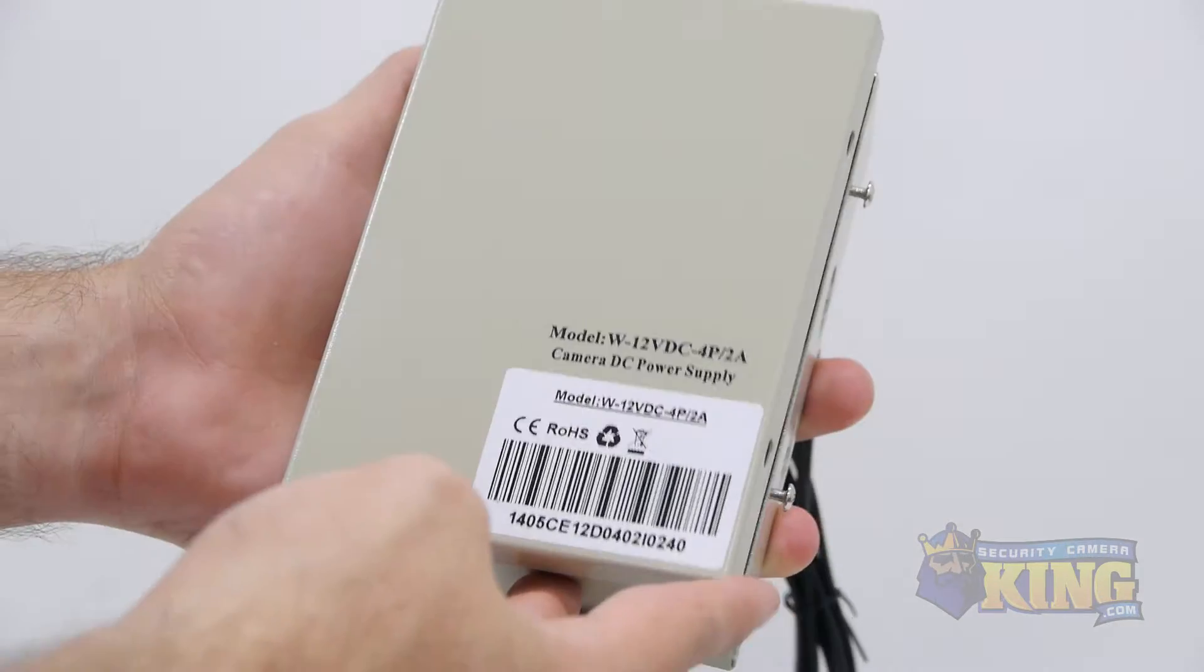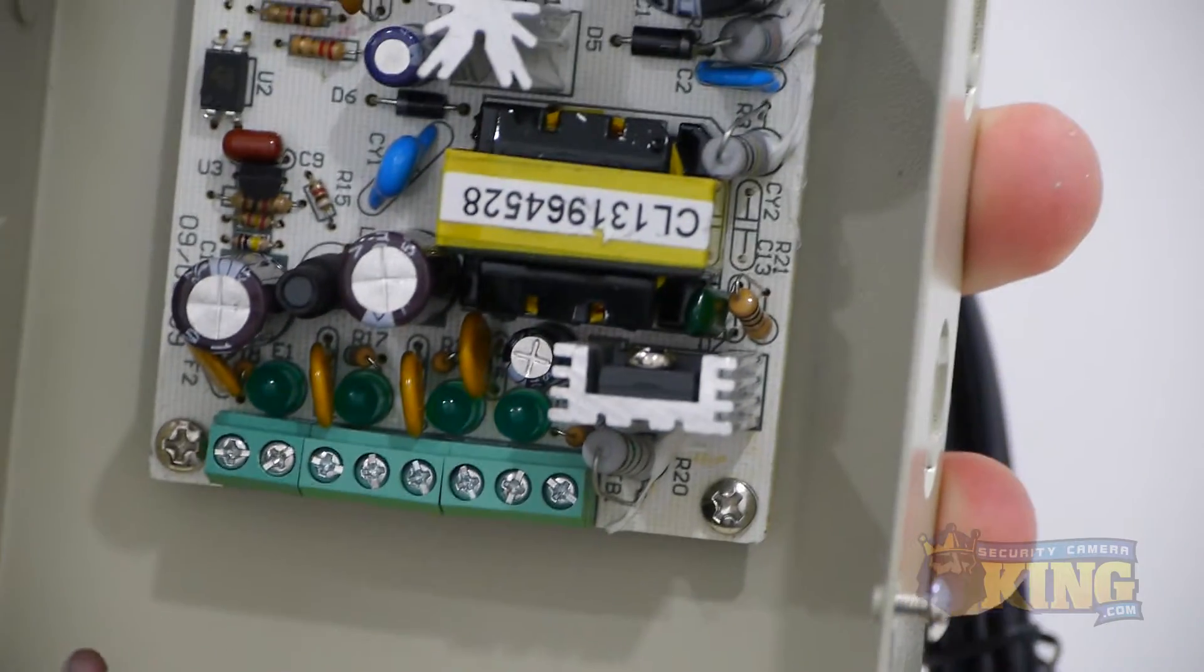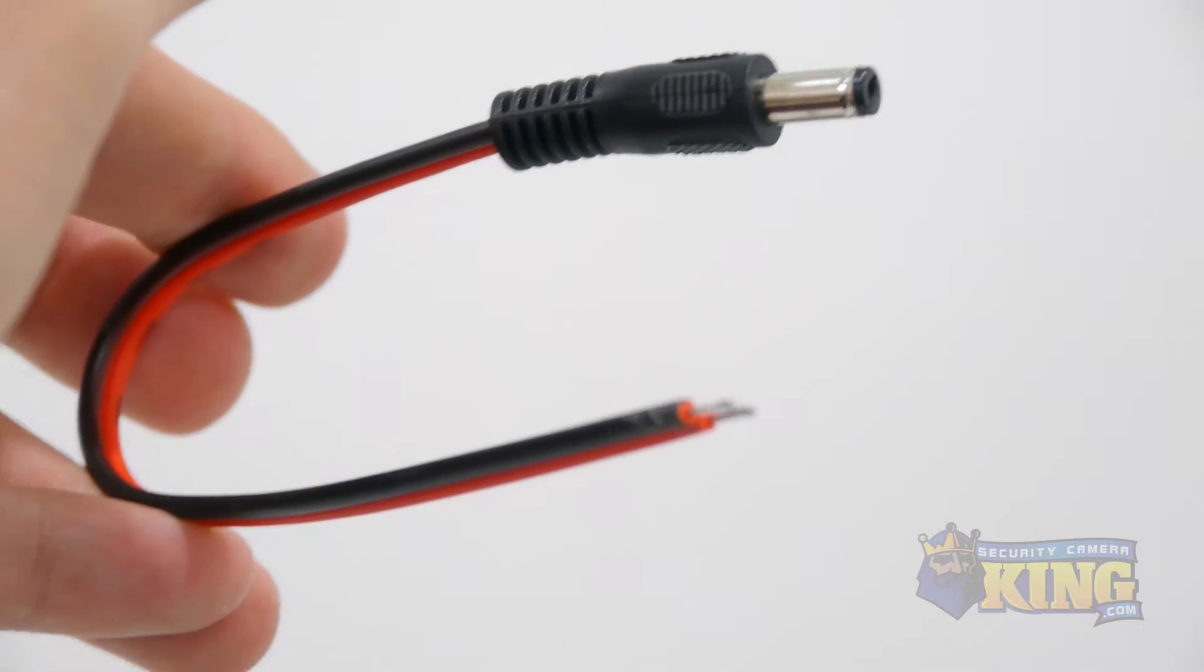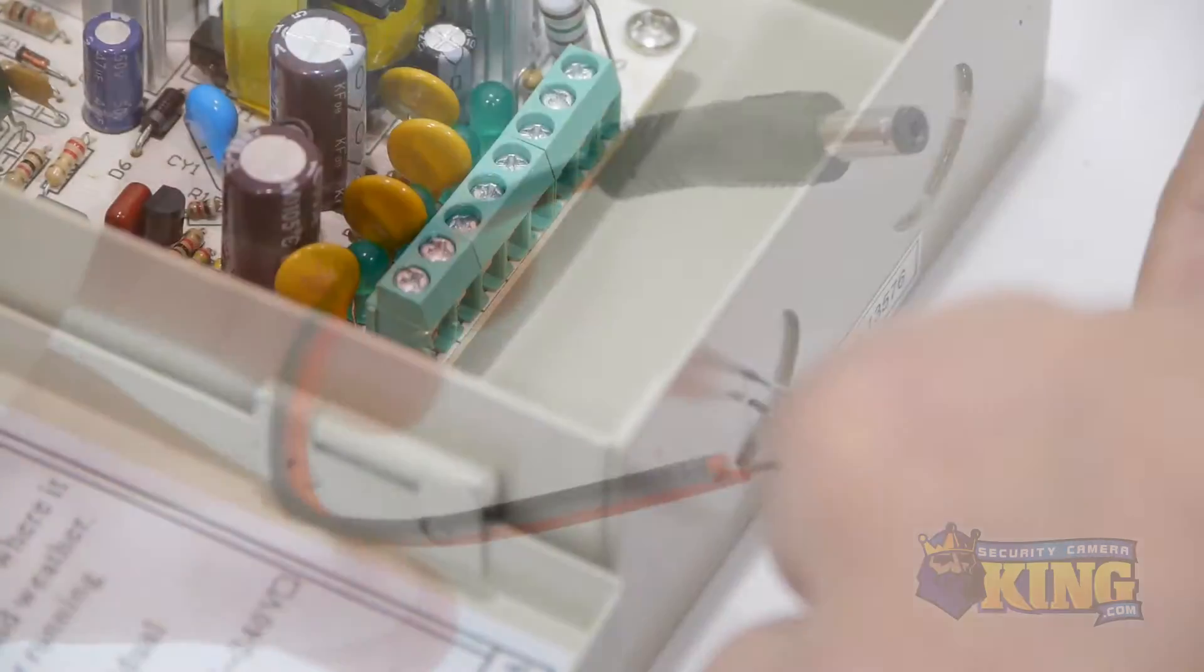You may choose a power distribution box instead of a plug-and-play power supply. This 4-channel distribution box has a terminal block that will supply power to the cameras. When using plug-and-play cables, you will attach a PT3 power lead to the terminal block for each camera.